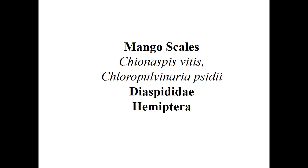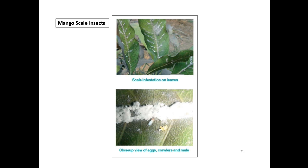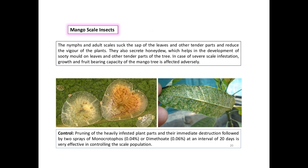Mango scale: two species — Ctenaspis vitis (Chloropulvinaria) and Diaspididae. Nymphs and adults suck cell sap of leaves and tender parts, reducing the vigor of the plant. They secrete honeydew, which leads to sooty mold development on leaves and tender parts. Under severe scale infestation, growth and fruit-bearing capacity of mango trees are affected. Control: prune heavily infested parts and destroy them, followed by two sprays of monocrotophos at an interval of 20 days for effective scale population control.